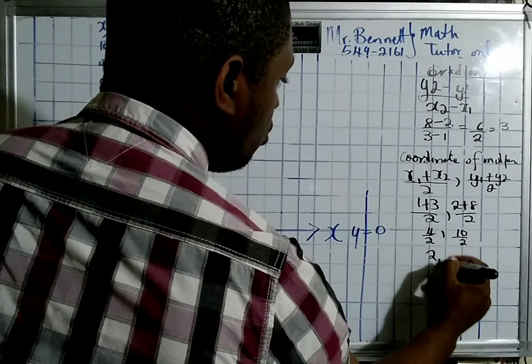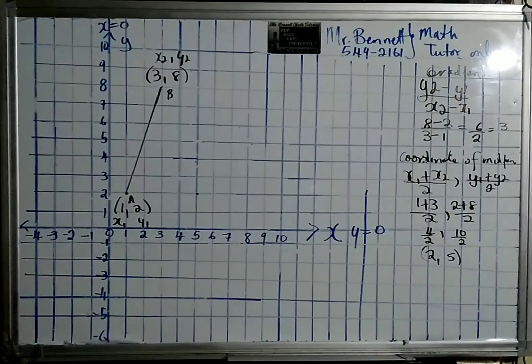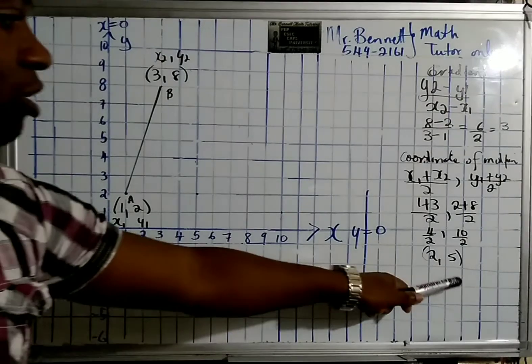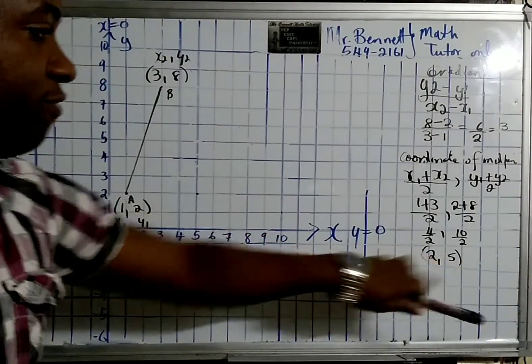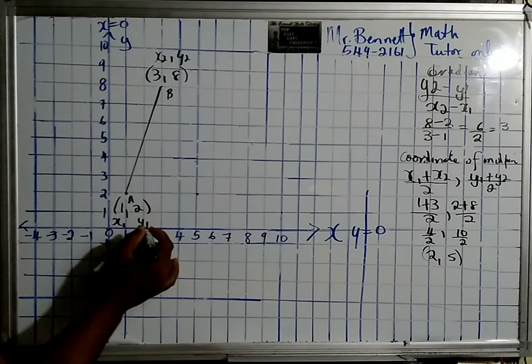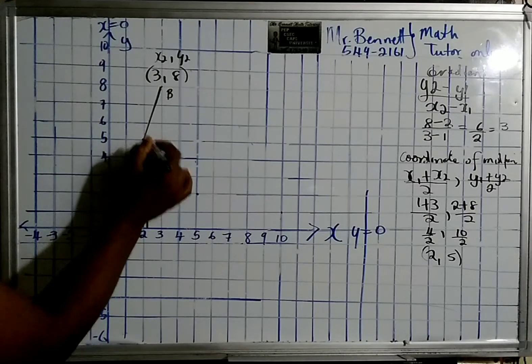So that gives us (2,5). What this means is the midpoint of the line can be found at this coordinate, which is (2,5). So let us look for that now. This is 2 and 5, so this right here is the midpoint of the line.